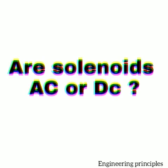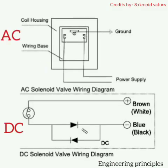AC or DC solenoids are the most important components used in solenoid valves to control the flow of liquids and gases. Solenoids are electromechanical devices that convert AC or DC electrical energy into linear motion. Most solenoid valves have a replaceable coil and can be used with coils with different voltages.